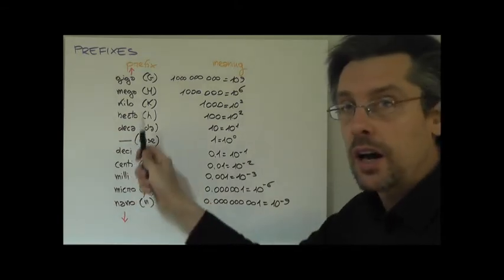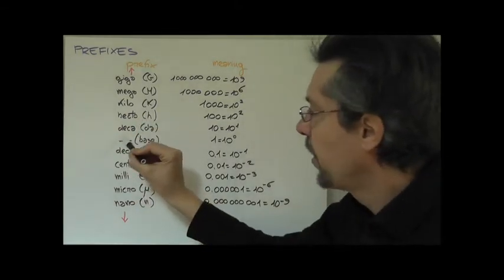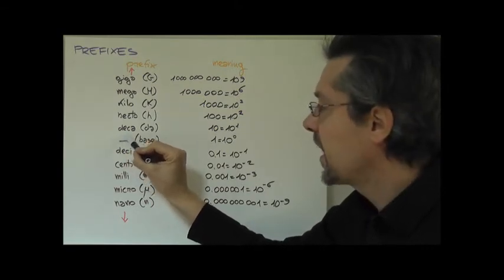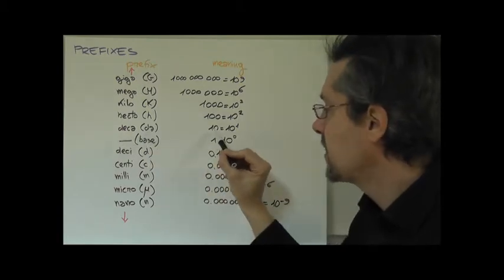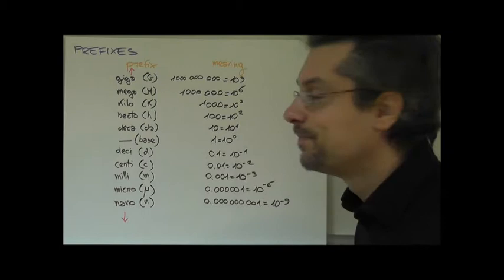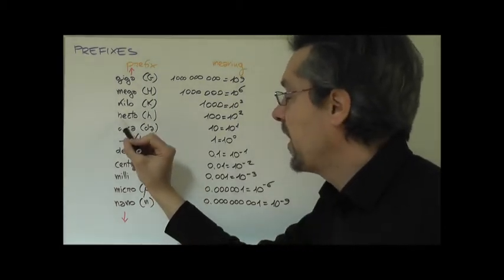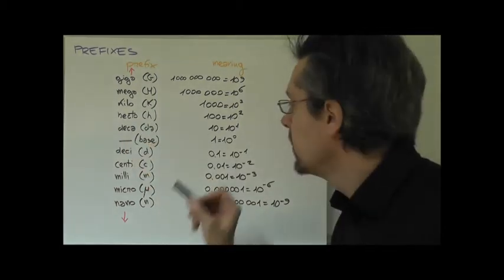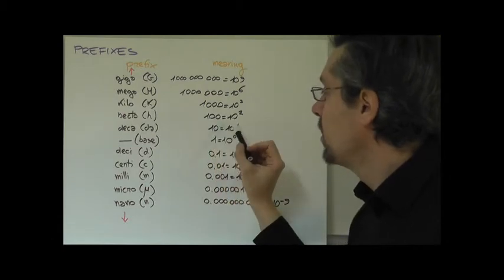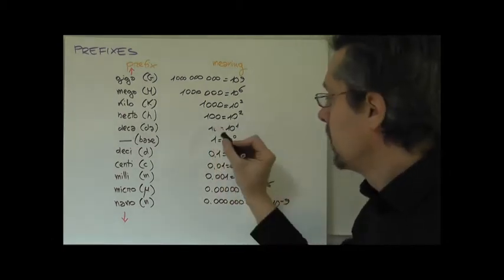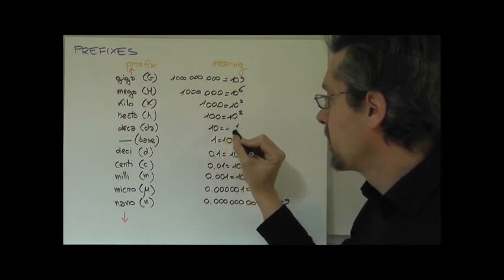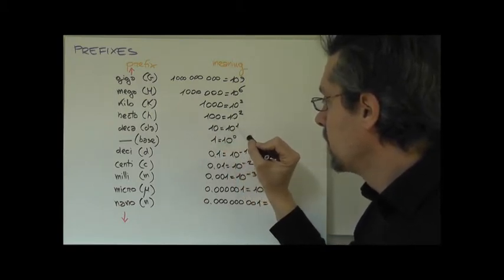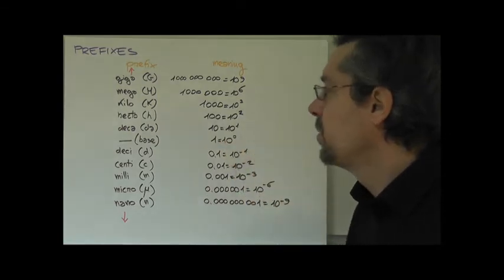From here we will start going upwards. The first prefix that we need is the deca. The symbol, in this case it is actually two letters, da, and that stands for 10 or 10 to the power of 1. Then we find the hecto, symbol H, and that corresponds to 100 or 10 to the power of 2. In case you are not familiar with the powers of 10, you can see that you just need to count the zeros. One zero, one is the power. Two zeros, two is the power.